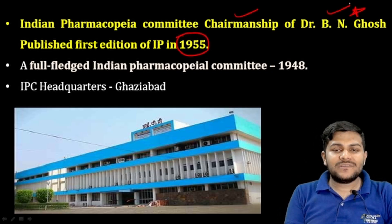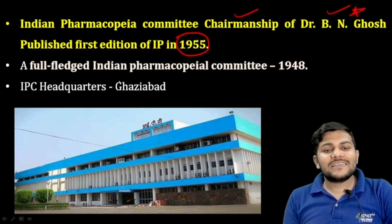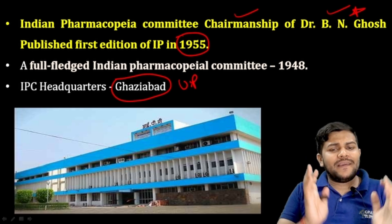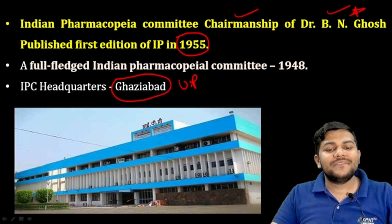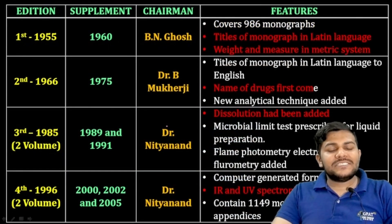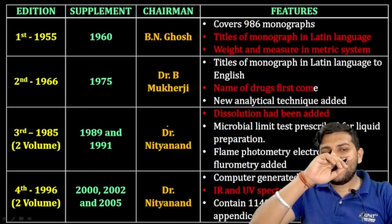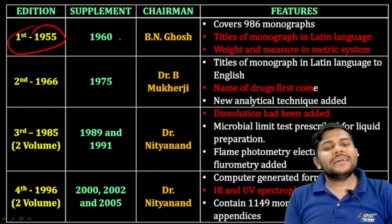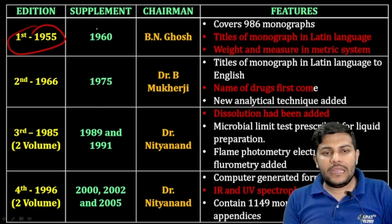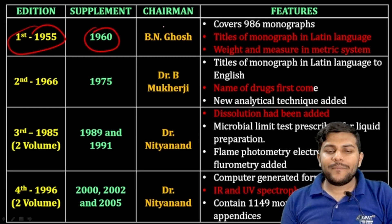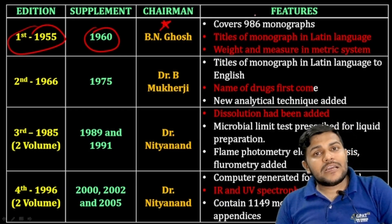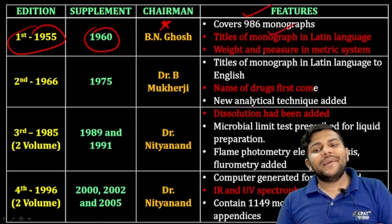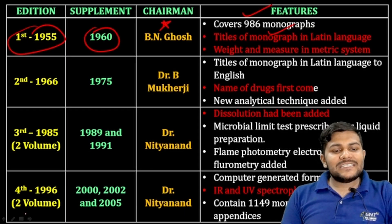The headquarters of IPC (Indian Pharmacopoeial Commission) is located in Ghaziabad, Uttar Pradesh. The first edition (1955) had a supplement or amendment in 1960. Under Dr. B.N. Gosh it covered 984 monographs, with titles in Latin terms and weights in the metric system.